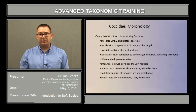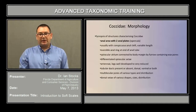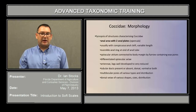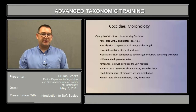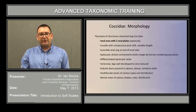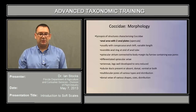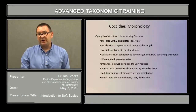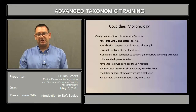The spiracular atrium is connected to the body margin by a furrow containing wax pores. Near the margin of the spiracular furrow there will be differentiated spiracular setae, though that's not always the case. Antennae and legs can vary from fully developed to extremely reduced, almost completely absent. Tubular ducts of various types can be present or absent; they can be dorsal or ventral in distribution when present, or both. Multilocular pores of various types and distribution are also important characters, as are the dorsal setae, which can be of various sizes, shapes, and distribution.